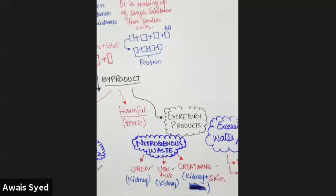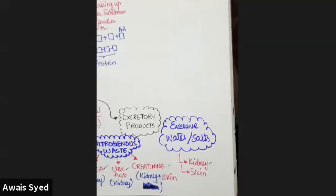Our skin produces sweat. In sweat, you have only very low amounts of creatinine removed. But on the other hand, you have excessive water and salt, which are also removed through the skin. So let's take a look at the kidney, which is the major excretory organ.